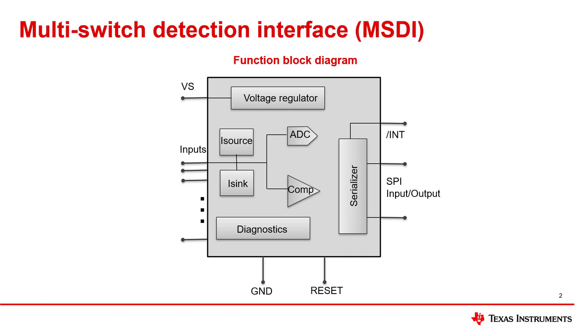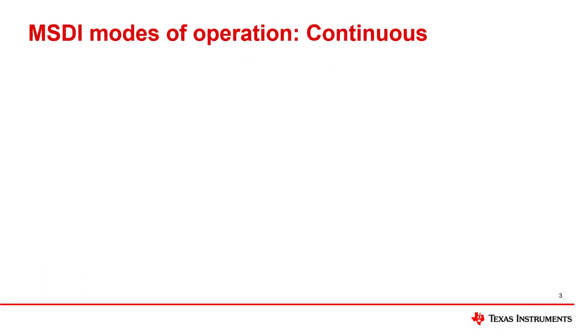Texas Instruments' MSDI devices provide six different wetting current settings: 0, 1, 2, 5, 10, and 15 milliamp. Depending on the system's application and power and thermal management needs, Texas Instruments MSDI devices can supply the wetting current in two different modes: continuous and polling mode. All modes allow the microcontroller to be configured to enable or disable monitoring of all or some of the 24 inputs available.